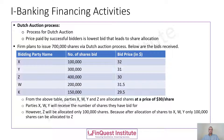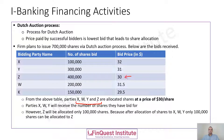Looking at the bids and prices, parties X, W, Y, and Z are the four parties who will be receiving shares. The price at which they will receive shares is the lowest bid that leads to a complete allocation of the outstanding shares. Looking at the price list, the lowest price among these four counterparties is $30 — from party Z — so the allocation price will be $30.